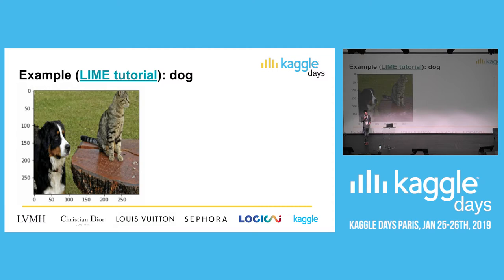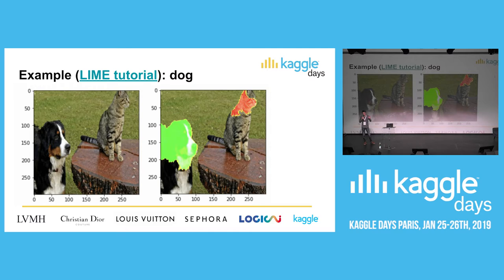Here's an example from the LIME tutorial. We have an image of a dog and a cat, and an explanation for the dog prediction might look like this - we have positive and negative highlighted parts of the image. We see the dog's head is positive and the cat's head is negative. Seeing this explanation, we trust the model more - we understand it knows this is a dog and this is a cat.